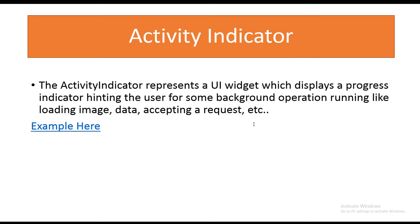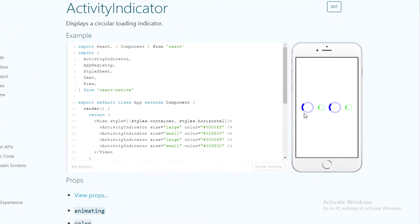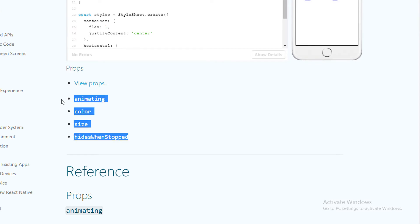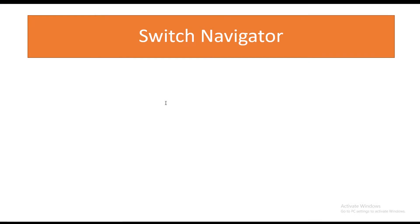The activity indicator represents a UI widget which displays a progress indicator, hinting the user that some background operation is running, like loading image data or accepting a request. It is a very easy component to work with. In this example we pass the size property — either large or small — and the color property, here set to blue and green, but you can use any color you want.